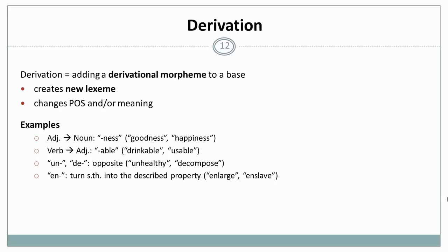Able changes a verb to an adjective, drinkable and usable. And here you can also see that it changes the meaning because it expresses that it's possible to do the action with something. You can use something that is usable. Un and de give us the opposite. So they don't change the part of speech, but they change the meaning. Healthy, unhealthy, compose, decompose. And en turns something into the described property again. And this again changes both part of speech and meaning. So enlarge, make something large. And enslave means to turn someone into a slave.